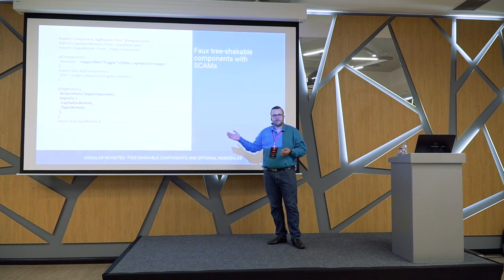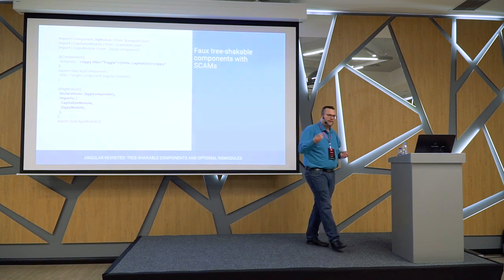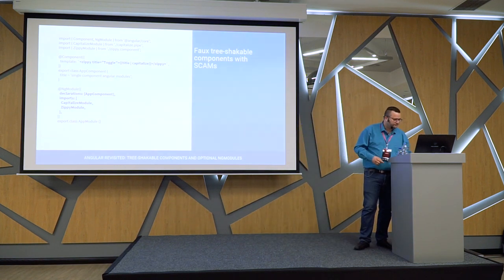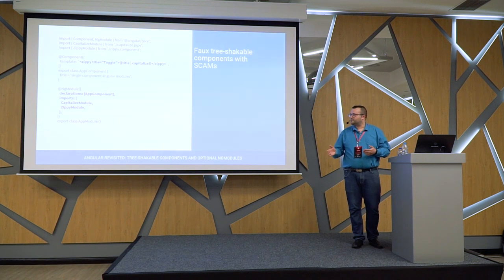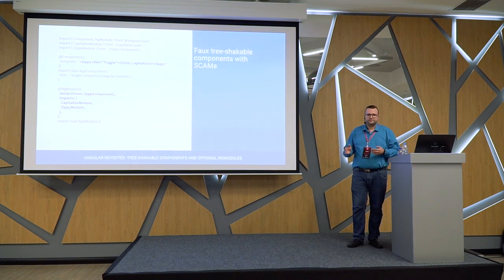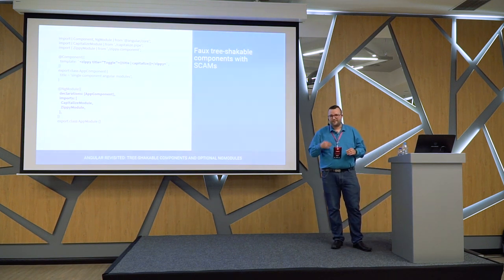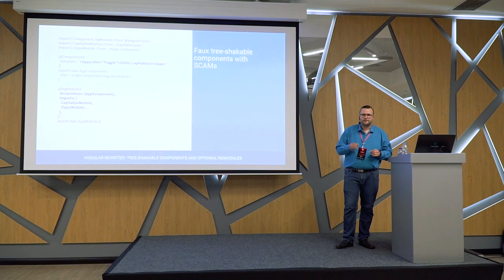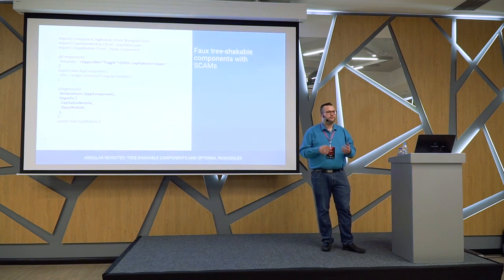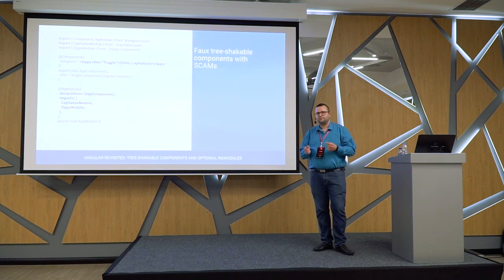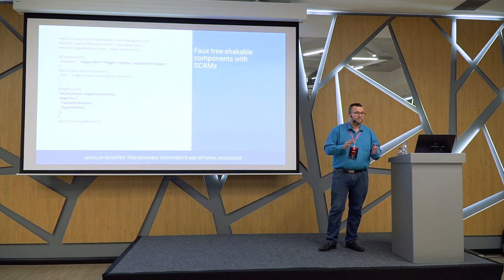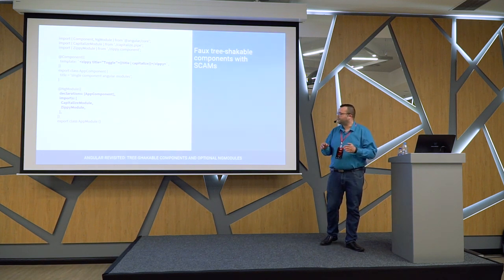Then we move up the component hierarchy to the app component. To use this city component, we create a SCAM for the app component — it only declares app component, and it only imports the SCAMs for the declarable dependencies used in this template. So it uses the city component, so we have to import the city SCAM. We use the capitalized pipe, so we import the capitalized module that only has the capitalized pipe. When we do this, we don't get fewer modules — in fact, we get more. But it's a means to an end, and it's something we can safely do today if we want to later move to actual tree-shakable components.